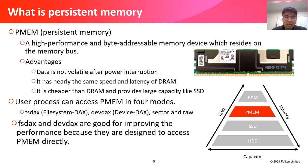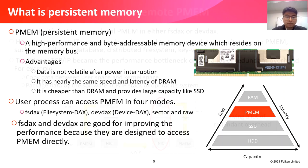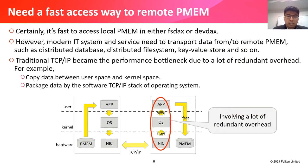User processes can access P-memory in four modes: FS-DAX, DV-DAX, SECT, and RAW. FS-DAX and DV-DAX are good for improving performance because they are designed to access P-memory directly. It's faster to access local P-memory in either FS-DAX or DV-DAX mode.